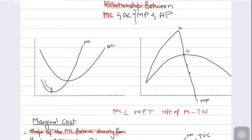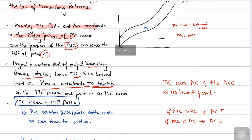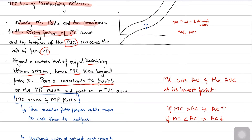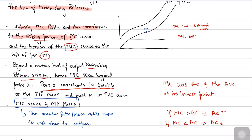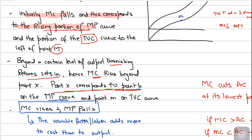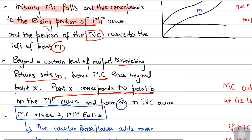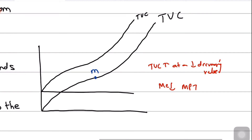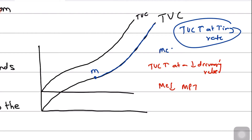You need to know these relationships because exam questions have asked you to link cost curves with marginal product and average product. Point X also corresponds to point M on the total variable cost curve. After point M, the total variable cost curve gets steeper, meaning TVC is rising at an increasing rate, which means marginal cost is going up.